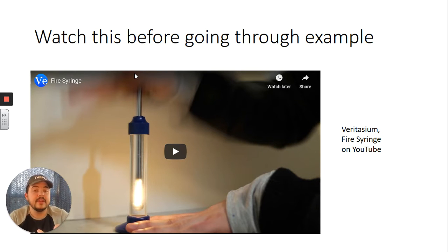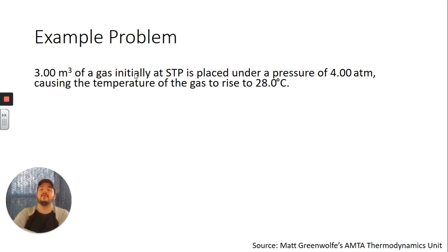We're also going to break this example up into two separate videos because there are a lot of different pieces that go into it. After those two pieces, we'll have a third follow-up video where we try and think through a little bit more conceptually what's going on. Here is the problem: we've got a three cubic meter ideal gas initially at standard temperature and pressure, and it is placed then under a pressure of four atmospheres which causes the temperature of the gas to increase to 28 degrees Celsius.